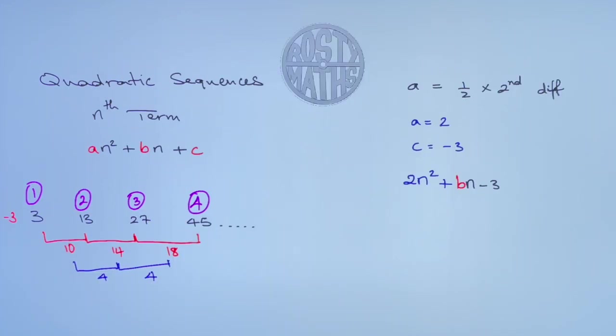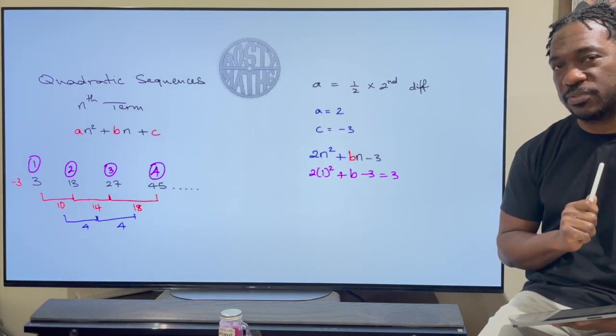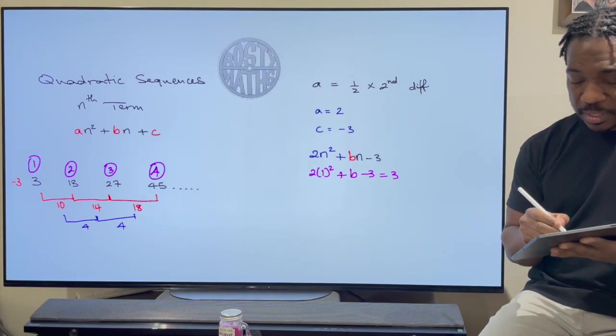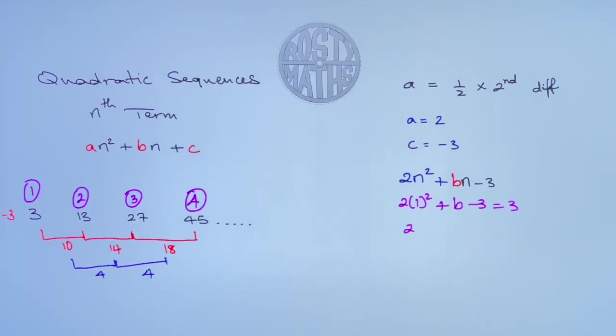So that's going to be 2 times 1² plus b times 1 is just b. Take away 3 and my answer should be 3. Why? Because the first term is 3. Okay let's work this out for b then. So this becomes 2 plus b take away 3 is equal to 3.